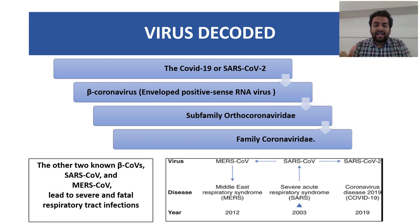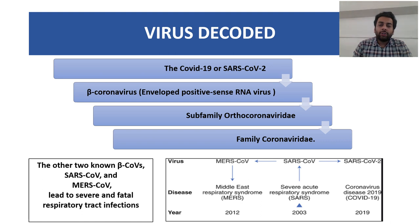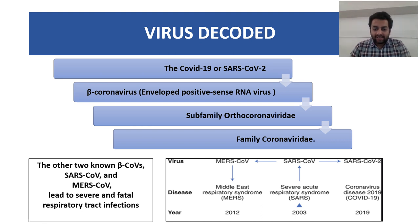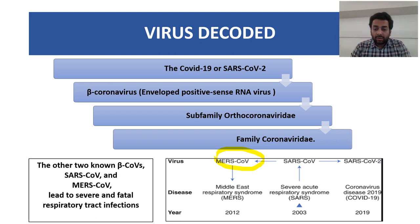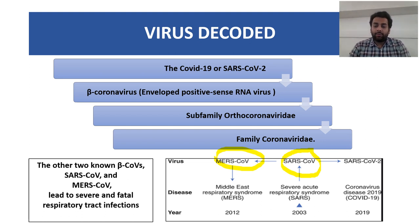Let us decode this virus. COVID-19 or SARS-CoV-2 is a beta coronavirus — an enveloped, positive-sense RNA virus. It belongs to the subfamily Orthocoronaviridae, within the family Coronaviridae. The other two known beta-coronaviruses are SARS coronavirus and MERS coronavirus, which led to severe and fatal outbreaks of respiratory tract infections. MERS coronavirus caused an outbreak in 2012 originating from Saudi Arabia, while SARS coronavirus caused an outbreak in 2003 beginning in China and spreading to Hong Kong, Canada, and the rest of the world. Now we are battling SARS-CoV-2, which has caused this pandemic from 2019 onward.